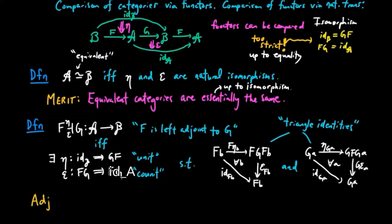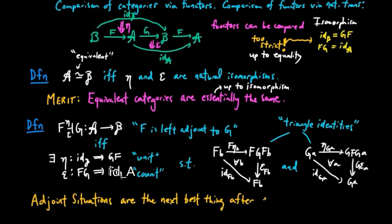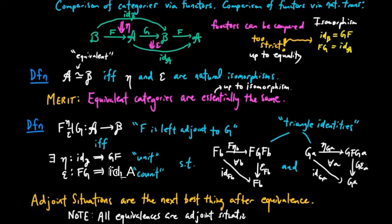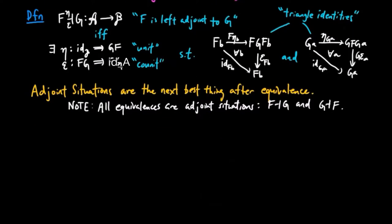We hope you will realize by the many examples in mathematics that adjoint situations are the next best thing after equivalence. Note that all equivalences are adjoint situations, and furthermore, the relation is reflexive: if F and G are an equivalence, then F is left adjoint to G, and G is left adjoint to F.